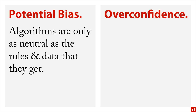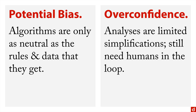Another issue is overconfidence. Analyses are limited simplifications — that's just what they are — and you still need humans in the loop to help interpret and apply them. The problem is when people run an algorithm, get a number to ten decimal places, and treat it as absolute, unshakable truth. If the data were biased, the algorithms incomplete, or the sampling not representative, you can have enormous problems and go down the wrong path. Humility is in order when doing data science work.